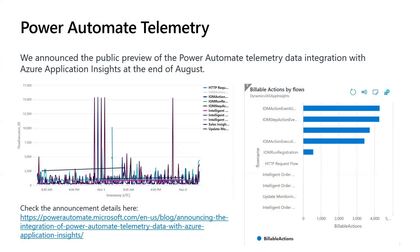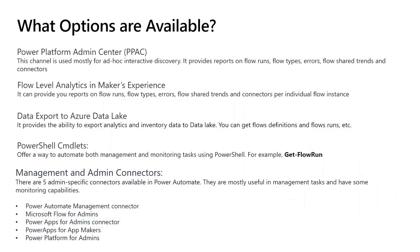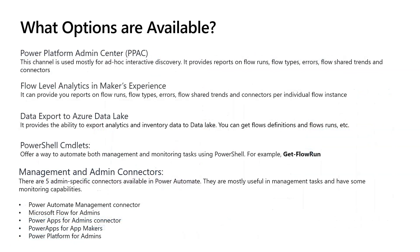We announced the public preview of Power Automate Telemetry at the end of August. It was a long time coming, as Dataverse telemetry integration with App Insights has been out for years. App Insights helps you enhance performance, reliability and quality of your applications. It monitors performance, detects anomalies, and helps diagnose issues. To understand the importance of this feature, let's look at what other options are available. In Power Platform Admin Center, you can find reports on Flow Runs, Flow Types, Errors, Trends and Connectors.